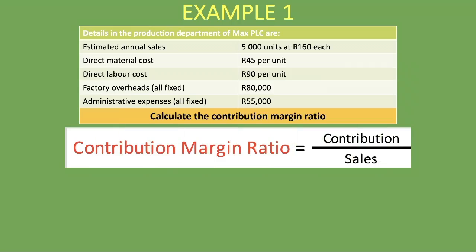Let's bring up our formula once more: contribution divided by sales. Now let's calculate our contribution. First we take our sales and deduct our variable costs. We are told that the estimated annual sales is 5,000 units at R160 each, so our sales price per unit is R160.